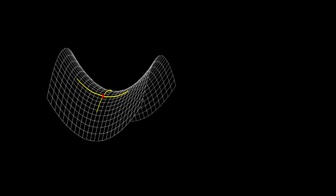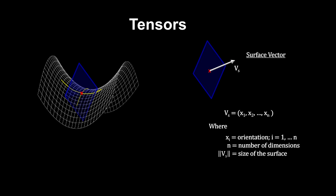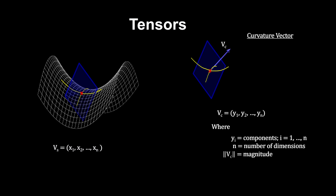We can also construct a surface for each dimension. Each surface has a size and an orientation. We can use vectors to mathematically represent the size and orientation of the surfaces. And for each surface, we can construct a vector that represents the curvature of the lines through a point on the surface.